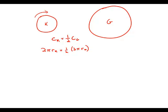And if we divide by 2π, what we get is that R of K, the radius of K, has to be half the radius of G.